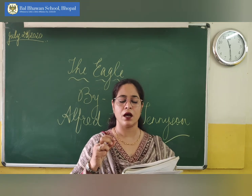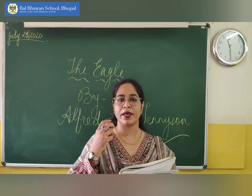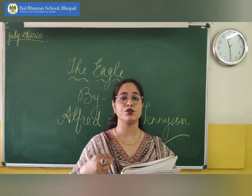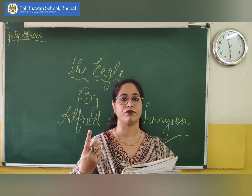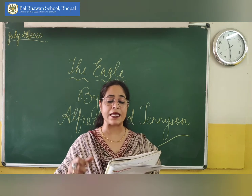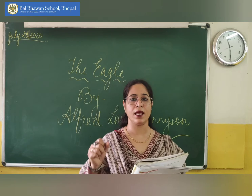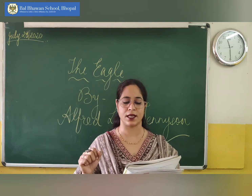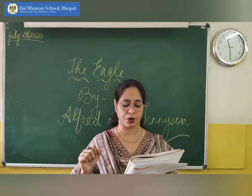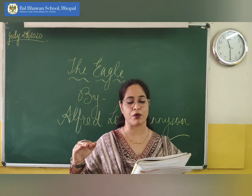Crooked means something that is not very smooth, and hands here refer to the claws of the eagle. So, he clasped — holds tightly — the crag with crooked hands, the crag being the steep surface of the rock.